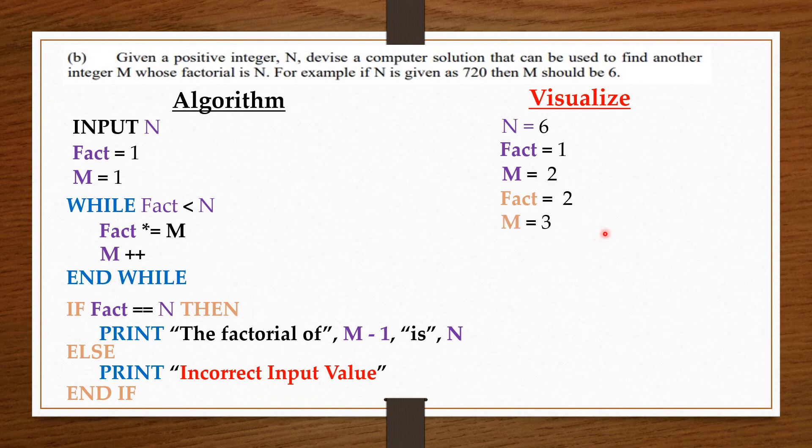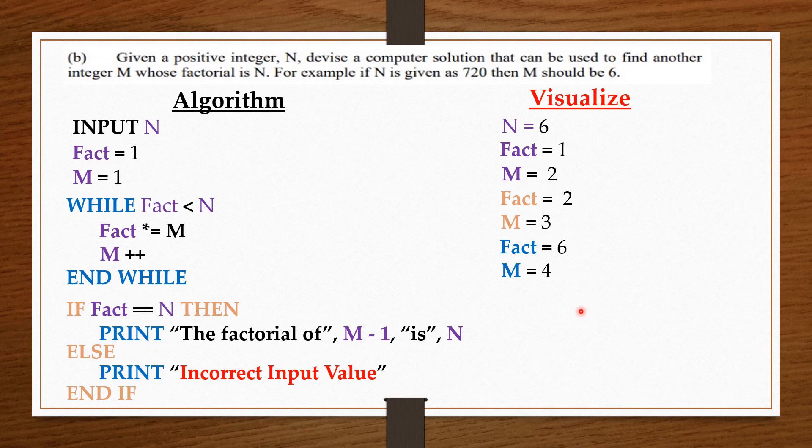Now, fact is 2, and 2 is still less than 6. So, 2 times M, which is now 3, we get 6. So, 2 times 3, we get 6. Then we increase M by 1 again. So, we get M to be equal to 4. Then we end the loop. Now, fact is 6 and N is 6. Since fact is not less than N, that is 6 is not less than 6, we can't enter this loop no more.